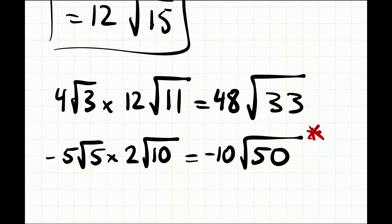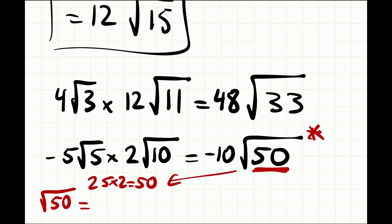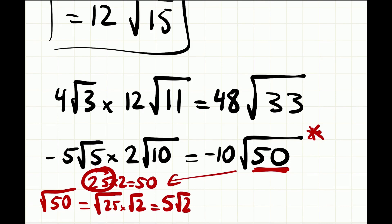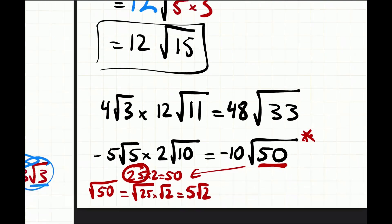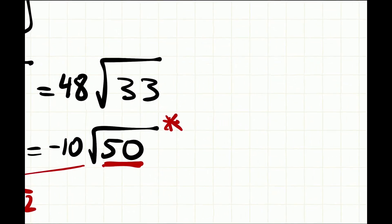I've chosen this example to illustrate something else — we always need to check to see that the surd itself is in its simplest form. With 50, we know that 25 times 2 equals 50, so we can simplify: √50 = √25 × √2. Since √25 is 5, we know √50 is the same as 5√2. So we're not done with this question yet.